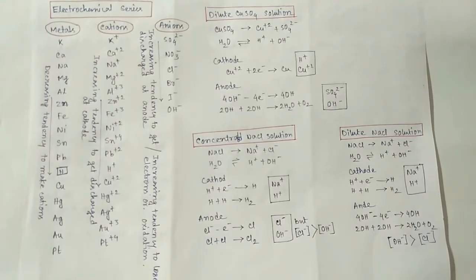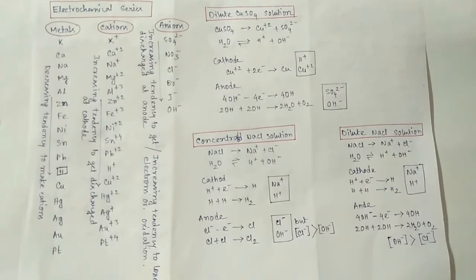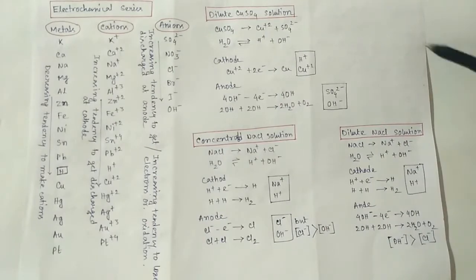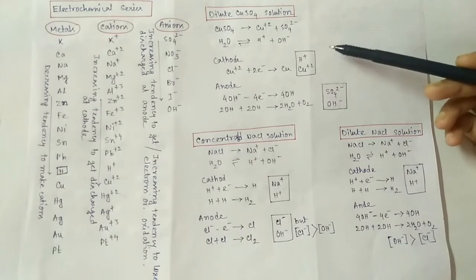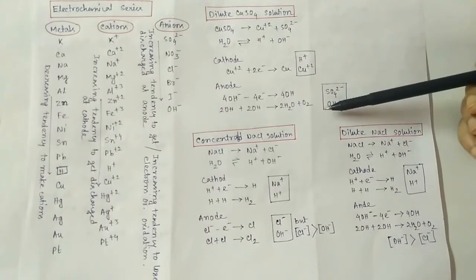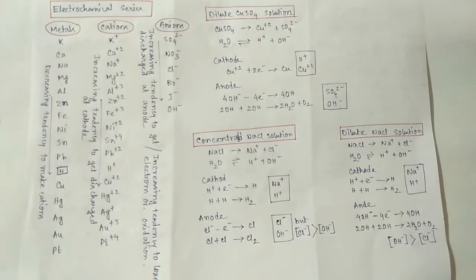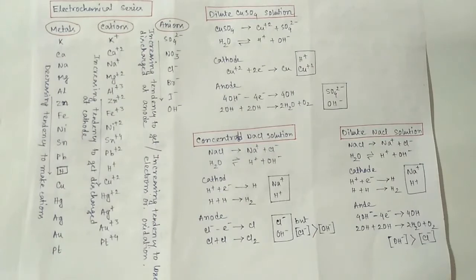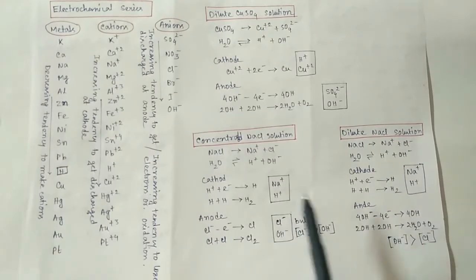One important point: the relative position of ions in the electrochemical series is highly important in determining which ions get discharged. Additionally, the relative concentration of ions is also important in determining what will get preference to discharge at the anode or cathode respectively.